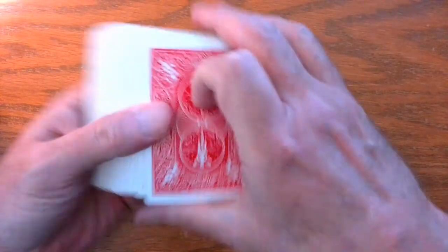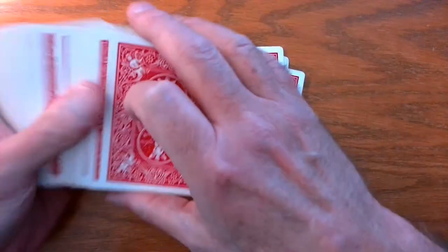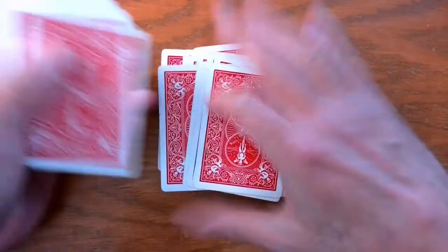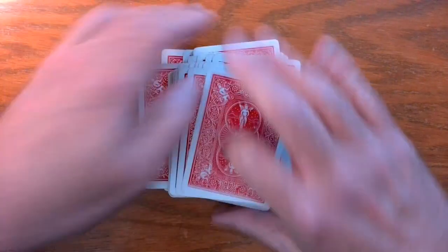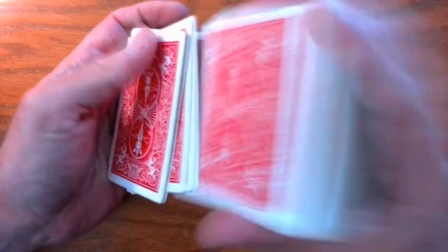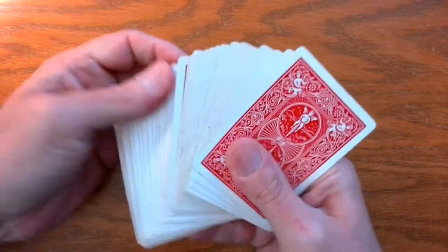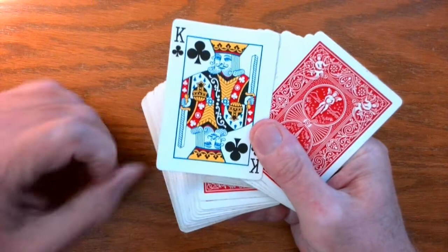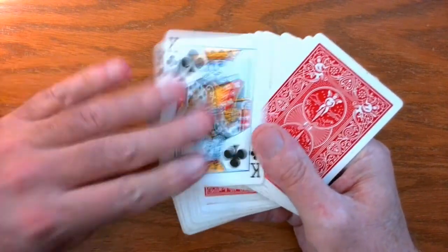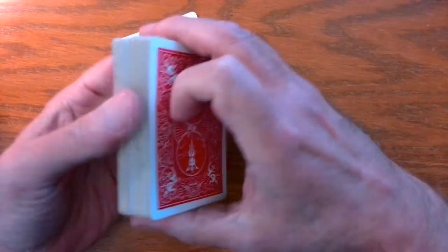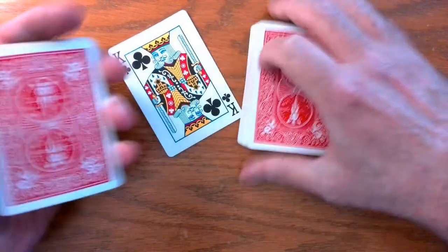We can shuffle them a bit if you want. I'm going to shuffle them like this, maybe shuffle them like this a bit here. Let's draw a card. How about this one right here? The King of Clubs, that'll be our card. Put it right here.